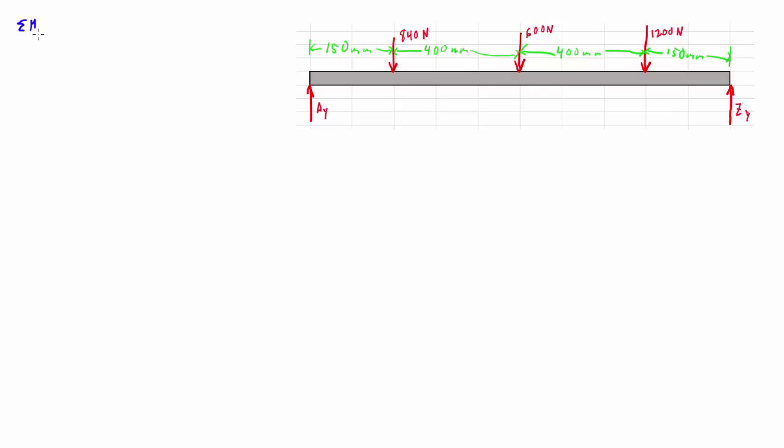We're going to sum the moments about point A, and they have to come out to be zero. We're going to start with the 840 Newton force first, multiply that times 150 millimeters, and make sure we get the direction on that. It looks like it's going clockwise around point A, so that means it's negative. That's what we do in mechanical engineering; civil engineers use that as a positive.